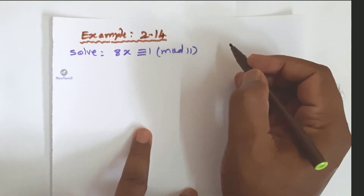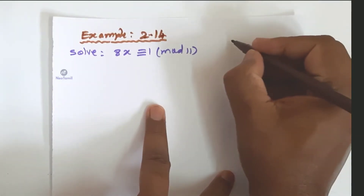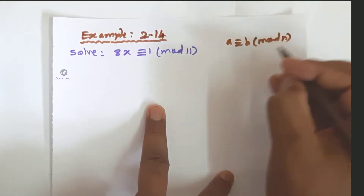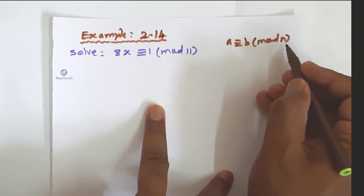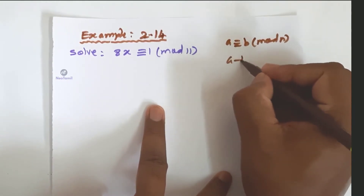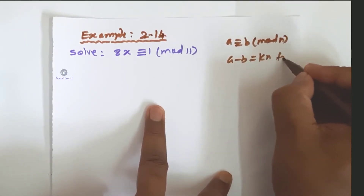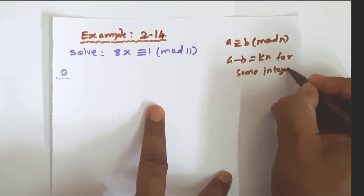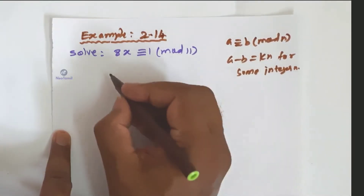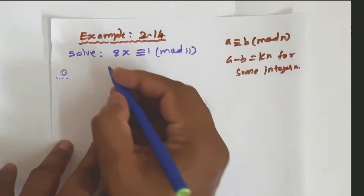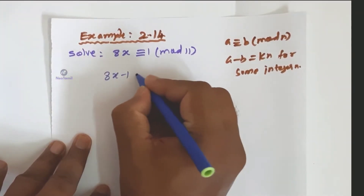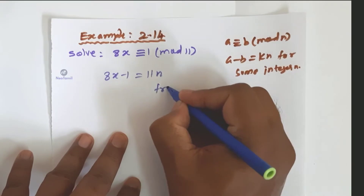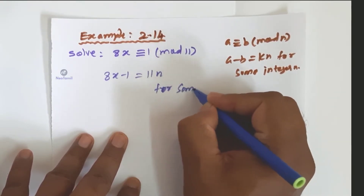For this, we are going to recall one concept: a ≡ b (mod n), where b is the remainder and n is the divisor. To convert this, a minus b equals kn for some integer n. Based on this idea, we can write 8x minus 1 equals 11n for some integer n.